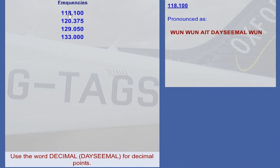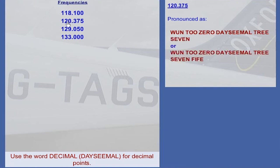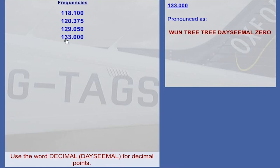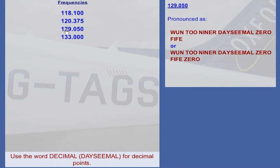1-1-8 decimal 1. 1-2-0 decimal 3-7. Or 1-3-3 decimal 0. 1-2-9 decimal 0-5. Or 1-2-9 decimal 0-5-0.